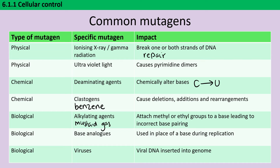Base analogues are chemicals which look quite similar to traditional DNA nucleotides and they can be used in place of a base during replication. Viruses such as the HPV virus are able to insert their own DNA into the genome, and this can also cause the disruption of genes and proper protein production.